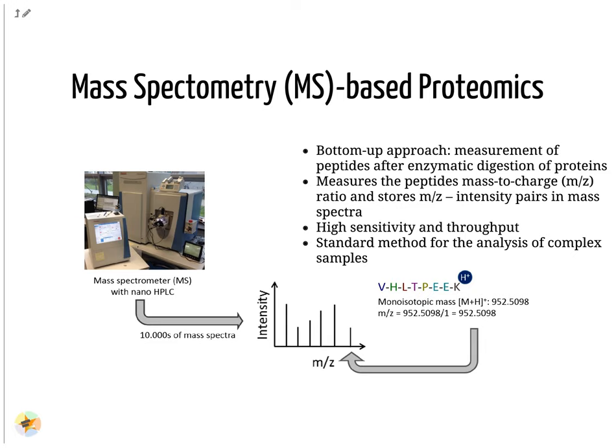Mass spectrometry is the standard method for proteomic analyses of complex samples. In the classical bottom-up approach, proteins are enzymatically digested into peptides. Peptides can be analyzed with high sensitivity and throughput in a mass spectrometer. The peptide mass is measured as mass-to-charge ratio. Only charged peptides can be measured. Tens of thousands of mass spectra are generated per sample, each consisting of many mass-to-charge and intensity pairs.